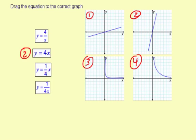And then this next one, y equals 1/4x, that's going to be a linear graph also through (0,0) with a slope of 1/4. So this is going to be graph number 1 right here.